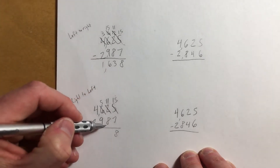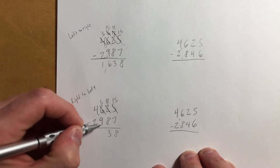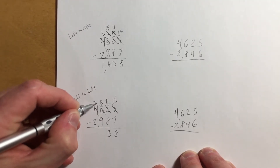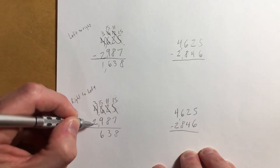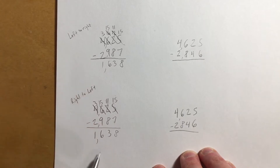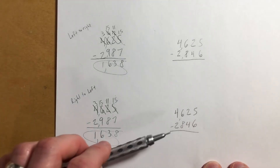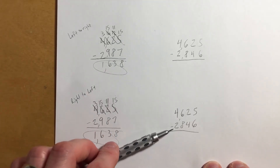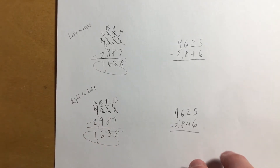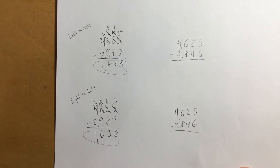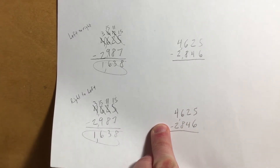Eleven minus eight is still 3. I can't do five minus nine, so I have to decompose — now I've got fifteen minus nine equals six, and three minus two equals one. We end up with the same answer. I'd like you to try that method on this problem as well, so go ahead and give that a shot, and we'll talk about it a little bit more tomorrow.